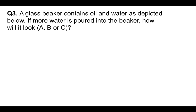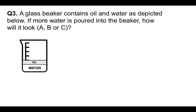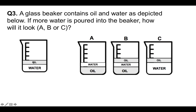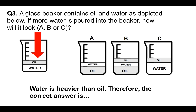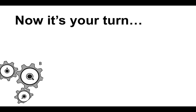Question three. A glass beaker — this is a real common question during mechanical comprehension tests. A glass beaker contains oil and water, as depicted below. If more water is poured into the beaker, how will it look? Is it A, B, or C? You can see the beaker depicted with oil on top of the water. To answer this — remember this — water is heavier than oil. Therefore, the correct answer is C, because oil will always be at the top since water is denser than oil. Always remember that, because this is a very common question.